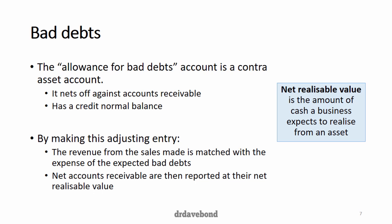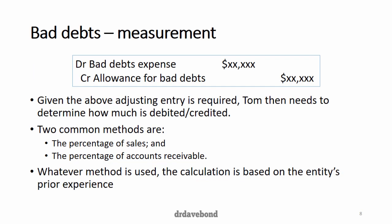This is important so that users of Tom's financial statements get a better sense of how much cash is actually likely to be realized. The adjustment comes through not as a credit to accounts receivable, but as a credit to the allowance account — the allowance for bad debts. This is a contra asset account that nets off against accounts receivable with a credit normal balance, and it will ultimately reduce the amount of assets on the balance sheet. The entry is debit bad debts expense, credit allowance for bad debts — but we don't know how much.